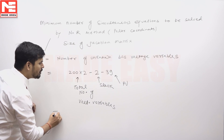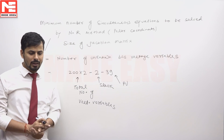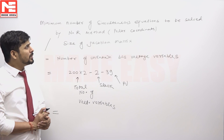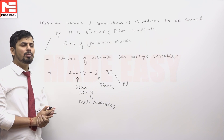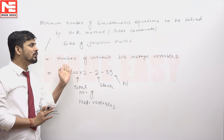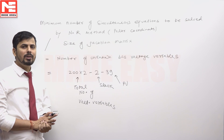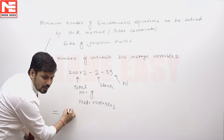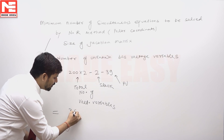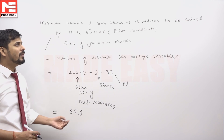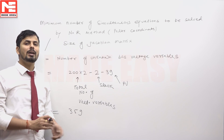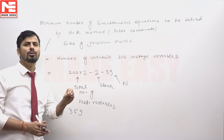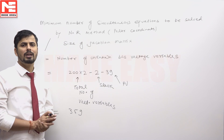So the minimum number of equations to be solved, or the size of the Jacobian matrix, which equals the number of unknown bus voltage variables, is 400 − 2 − 39 = 359. We will have to solve 359 simultaneous equations to find 359 unknown bus voltage variables in the Newton-Raphson method.